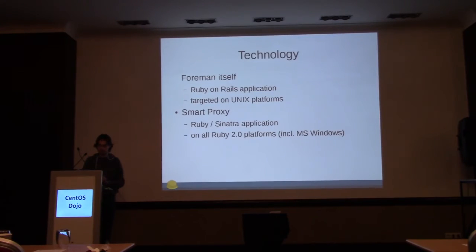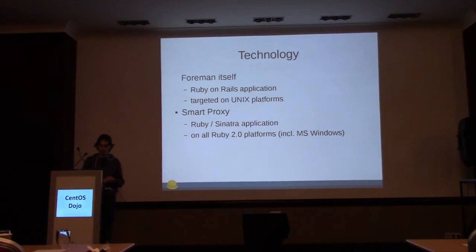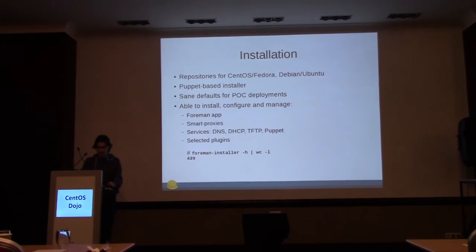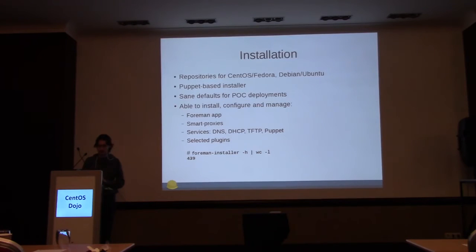The technology itself: Foreman is a Ruby on Rails application. We started on Unix platforms and the smart proxy is written in Ruby using a Sinatra-like network framework to provide REST APIs to Foreman. It supports Ruby 2.0 and newer platforms, which includes Windows. For installation, there are repositories for CentOS and Ubuntu. It is also known to work on FreeBSD, Arch Linux, and maybe some other platforms.